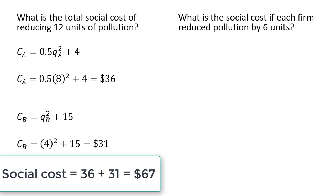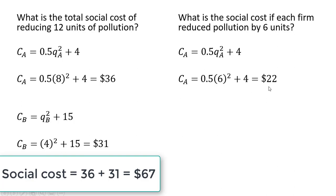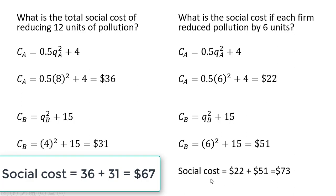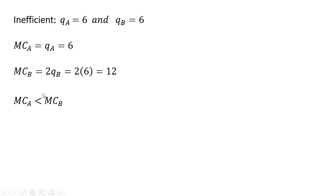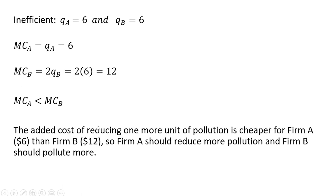What is the social cost if each firm reduced pollution by six units? If firm A reduced six units instead of eight, its total cost would be $22. If firm B reduced six units instead of four, its total cost would be $51, giving a social cost of $73. This is not the efficient outcome — evenly splitting the 12 units is inefficient. We can see this by evaluating each firm's marginal cost at six units: firm A's marginal cost is lower than firm B's, so firm A should reduce more pollution and firm B should reduce less.